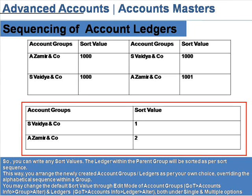This way you can change the newly upgraded account groups' ledgers as per your own choice, and define the alphabetical sequence within a group. You may change the default sort value through the edit mode of account groups.